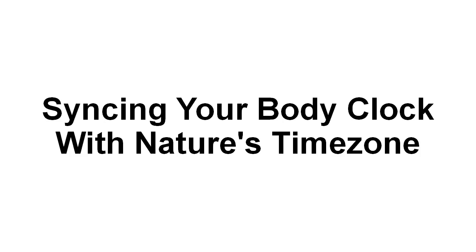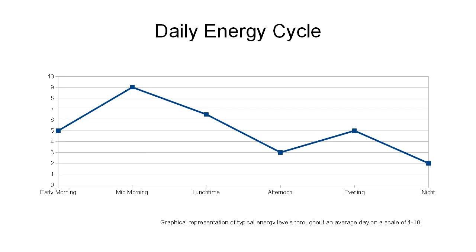In this video, I want to talk you through how you go about syncing your body clock with nature's time zone. This graph here is basically a graphical representation of typical energy levels throughout an average day on a scale of 1 to 10. It's not based on anything scientific — it's just there to give you an idea as to the sort of energy levels that most people have over an average day.